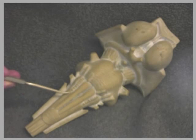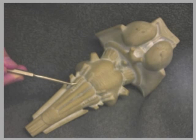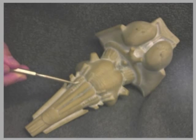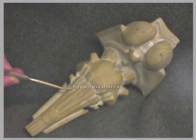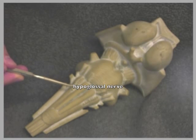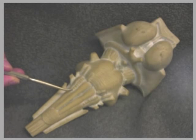And finally, we come back up here medial to the olive with the hypoglossal nerve, and that is the nerve for the tongue.